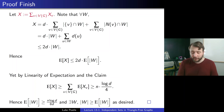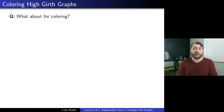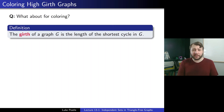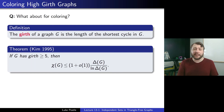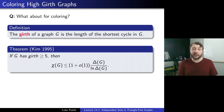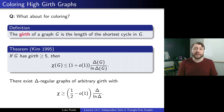In the time remaining, let's talk about further directions. For coloring: the girth of a graph G is the length of its shortest cycle. A seminal result of Kim in 1995 showed that if G has girth at least 5 (no triangles and no 4-cycles), then chi(G) is at most (1 + o(1)) delta(G) / ln delta(G).